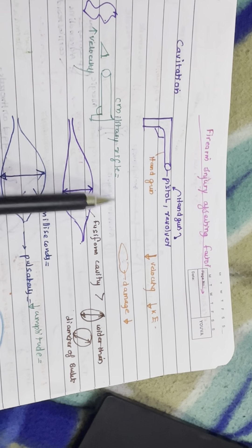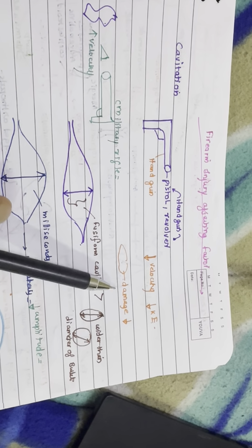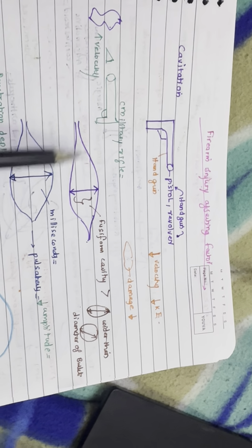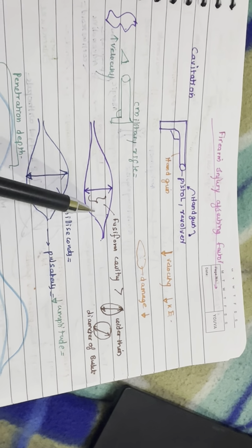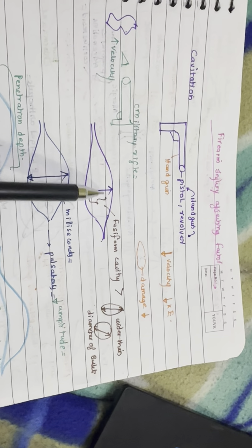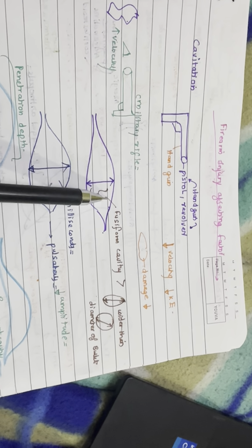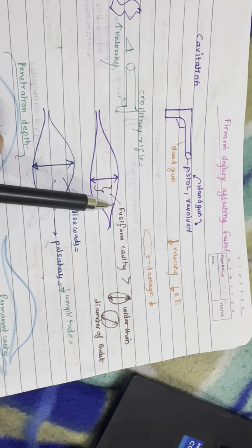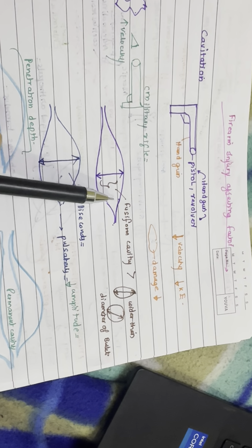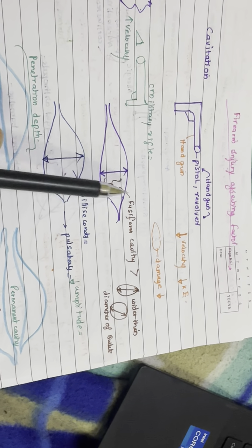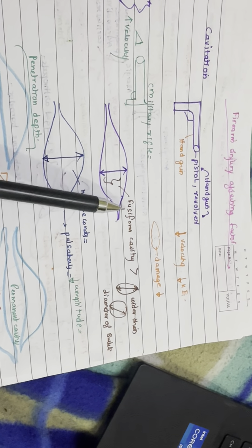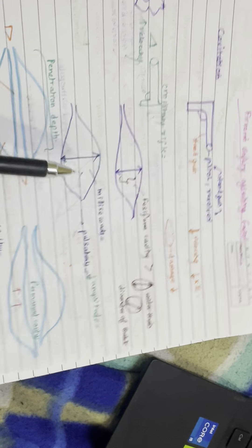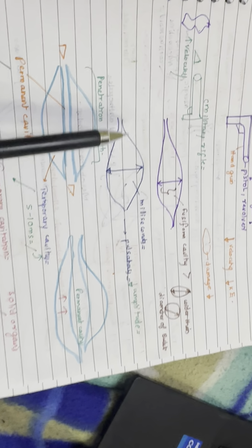A bullet having high velocity, for example a military rifle, crushes and shreds the tissues in its path, as well as producing a transient cavity far wider than the diameter of the bullet. This cavity reaches a maximum size within milliseconds and then pulsates with decreasing amplitude, resulting from temporary tissue displacements and recoil outward following bullet passage.